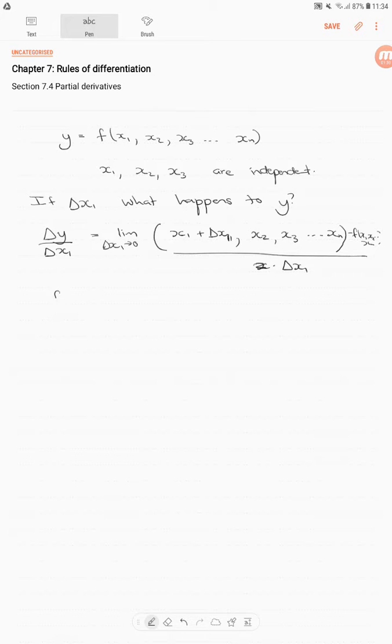This is called the partial derivative. The partial derivative f1 is simply the change in y given the change in x1. And we take the limit as that change is small. And this is equal to the partial derivative, which we denote by ∂y/∂x1.